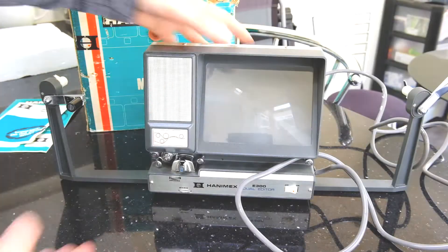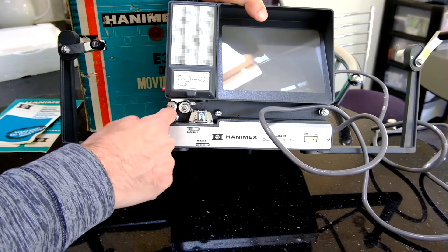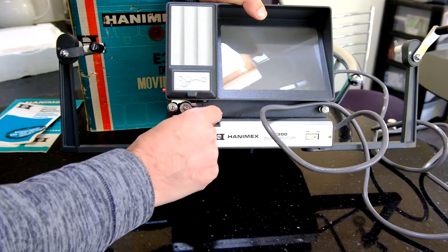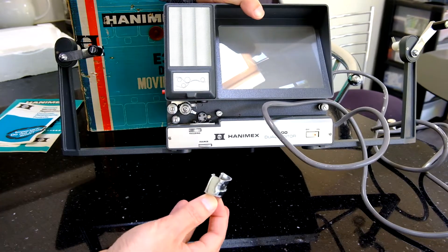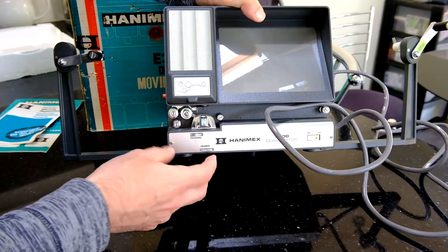In my last video I did an unboxing of this Hanamex E300 film editor from the 1970s. In this video I'm going to open it up and take a look at what's inside.